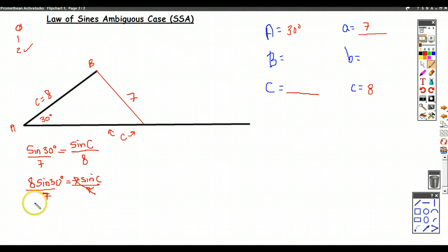So when you cross multiply and solve, what you get is 8 sine of 30 degrees turns out to be 4 sevenths, which means that angle C is equal to sine inverse of 4 sevenths, and that produces an angle of 34.85 degrees.